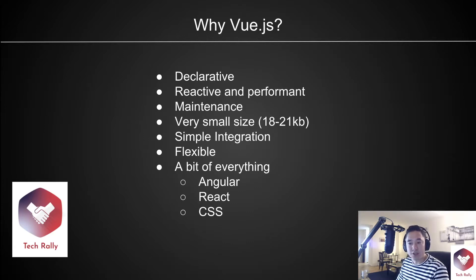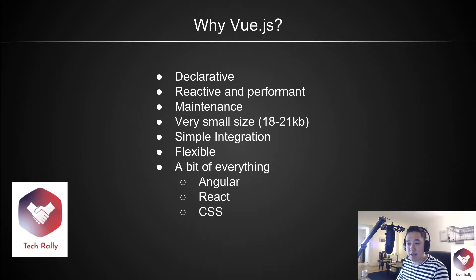Why Vue.js? Vue.js is declarative and allows you to render data to the DOM with templating syntax. It is reactive using both setters and getters. Maintenance of the application is straightforward via components, props, and state management. Vue.js is very small in size and flexible, and it seems to have a great blend of good things from both React and Angular.